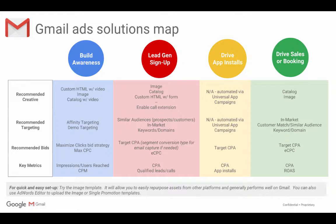Gmail can help you with many of those objectives. For example, if you are looking to build awareness, we recommend you create custom HTML creatives with video, image, or catalog with video. You could target affinity or demographic targeting and bid by maximizing clicks or using max CPC, looking into impressions or users reached as well as CPM.